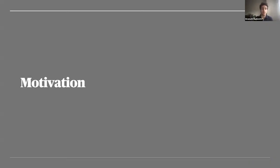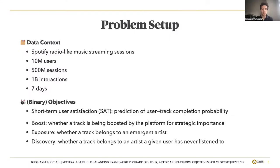Let's see why it is important to study multi-objective recommendations, using the use case of Spotify, which is a major music streaming platform. We look at around 500 million radio streaming sessions over a seven-day period across 10 million users. In terms of objectives, we consider four binary objectives. The first is short-term user satisfaction, which we call SAT — the probability that a user completely listens to a music track. This is what user-centric single-objective recommender systems model when they're trained.